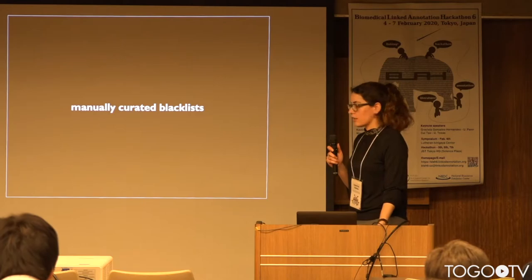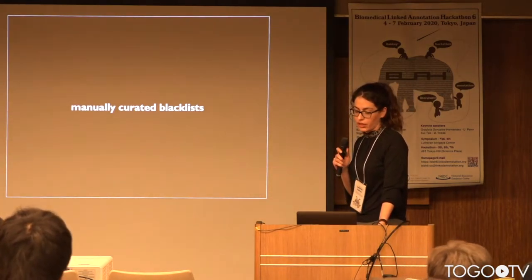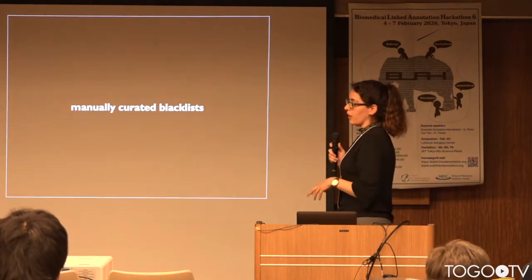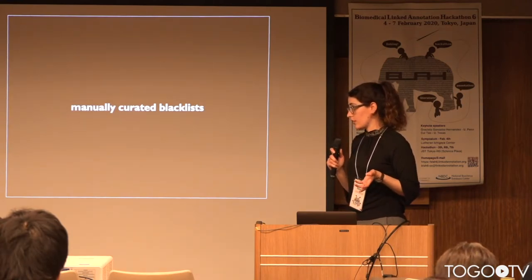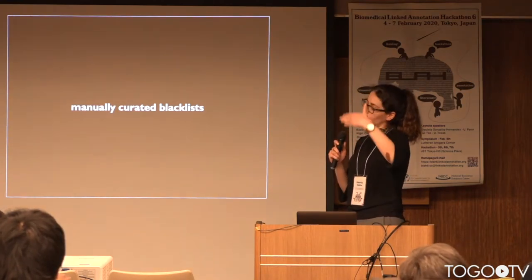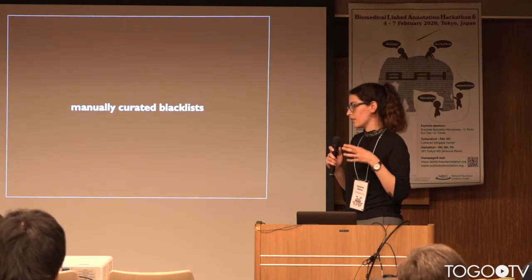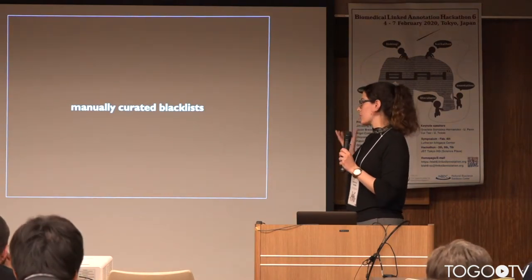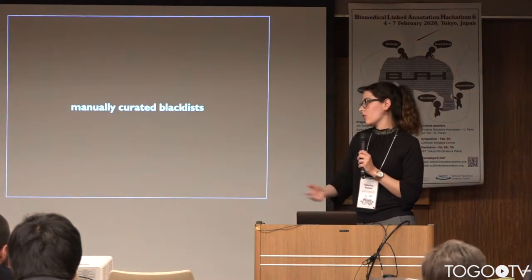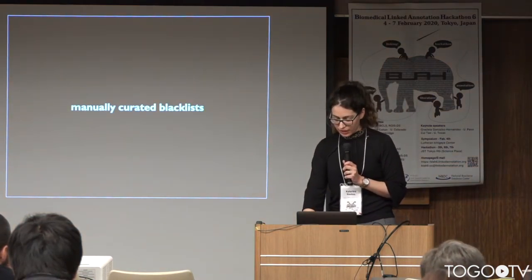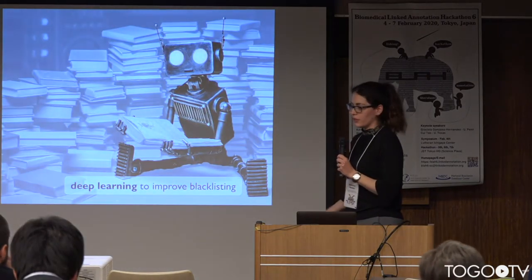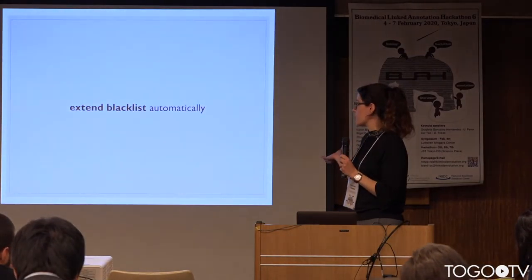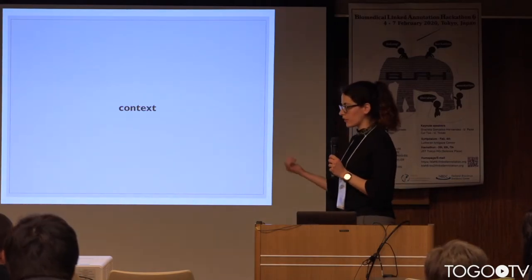For precision we need blacklists, but the problem with blacklists at this time is that they are manually curated. This means we go through the most frequent terms in a corpus and identify those that are not actual entities and put them in the blacklist. Since this involves manual curation it can only scale so far. What we are proposing is to use deep learning to improve this blacklisting by extending the blacklist automatically using the context around the words.